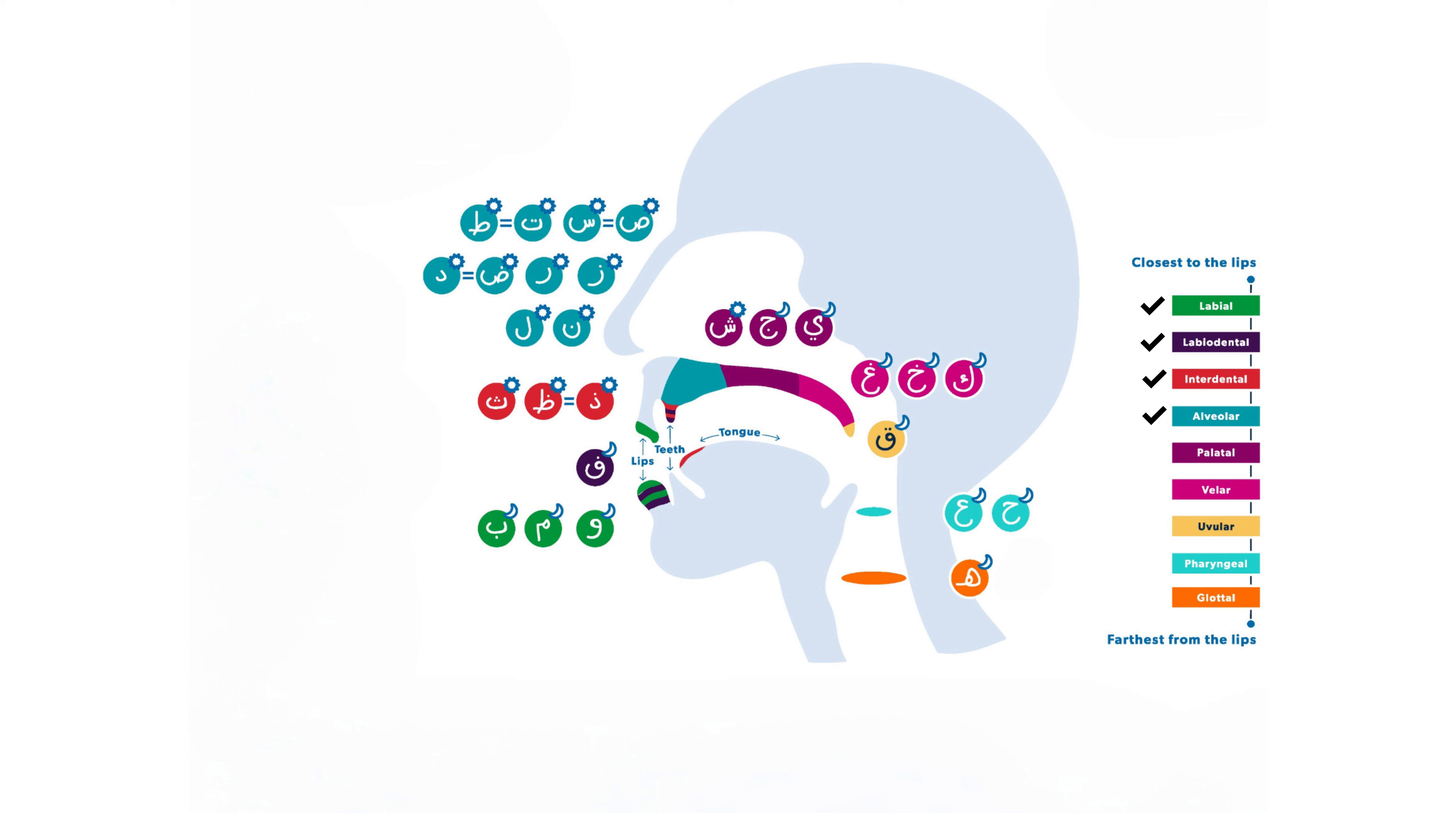Now moving on to the alveolar letters, which means their sound are produced from the alveolar range, the area right behind the teeth. And the alveolar letters of Arabic are Ta, Dal, Ra, Zain, Seen, Saad, Daad, Tah, Noon, and Lam.